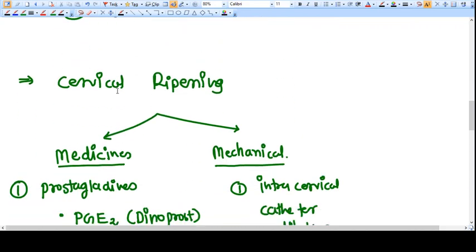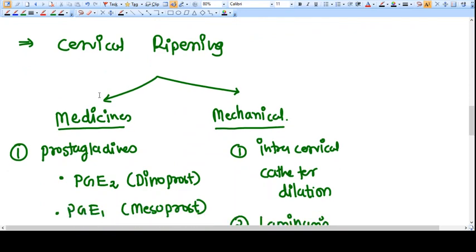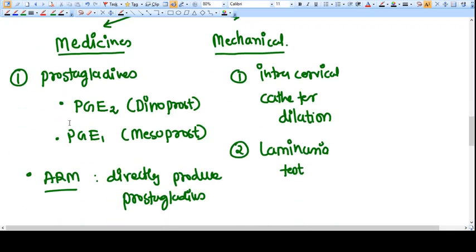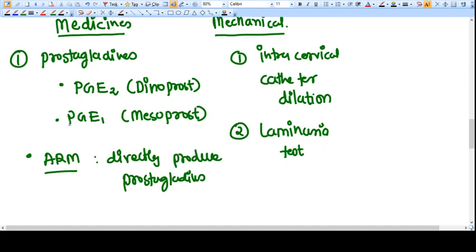For cervical ripening, there are many methods. There are medicines and mechanical options. The medicines preferred are prostaglandins. Two prostaglandins used: PGE2 (dinoprostone) and PGE1 (misoprostol). We can also do ARM (artificial rupture of membrane) that will eventually produce prostaglandins. So ultimately what we need is prostaglandins.